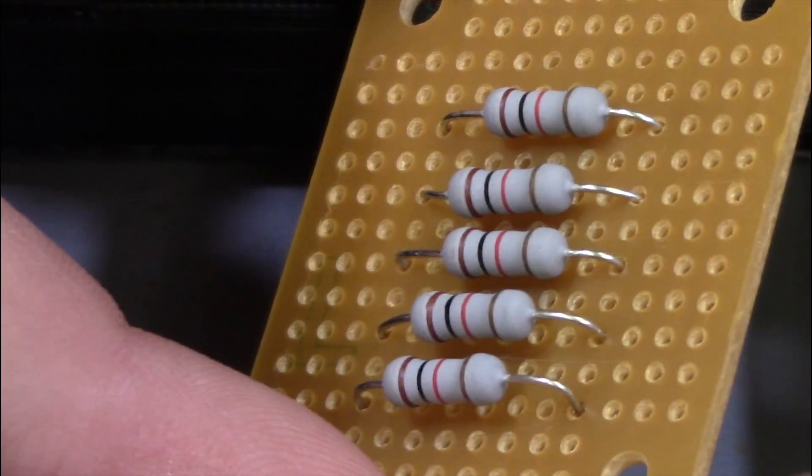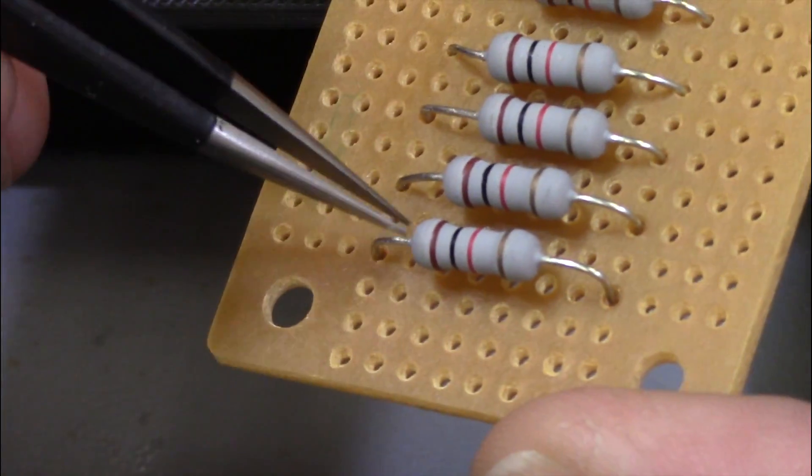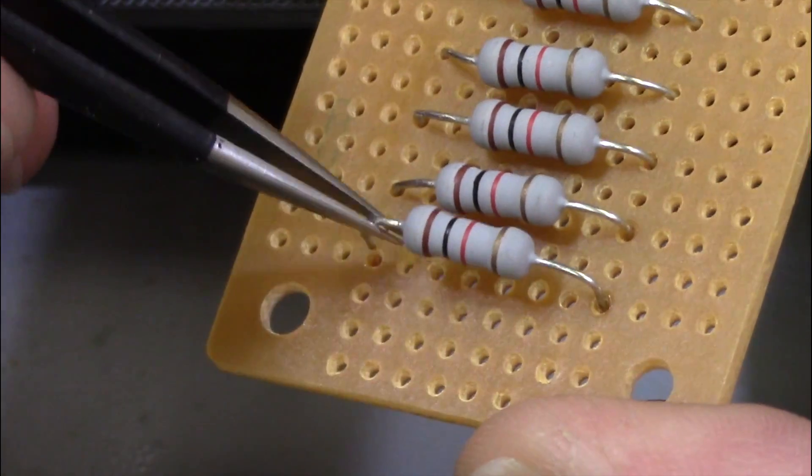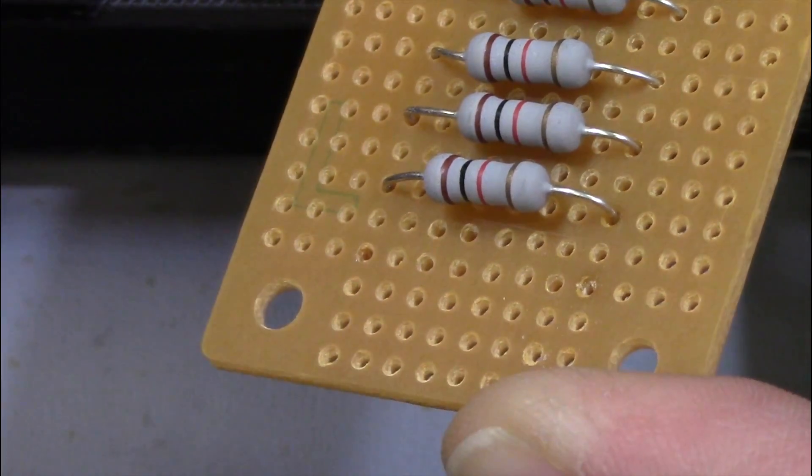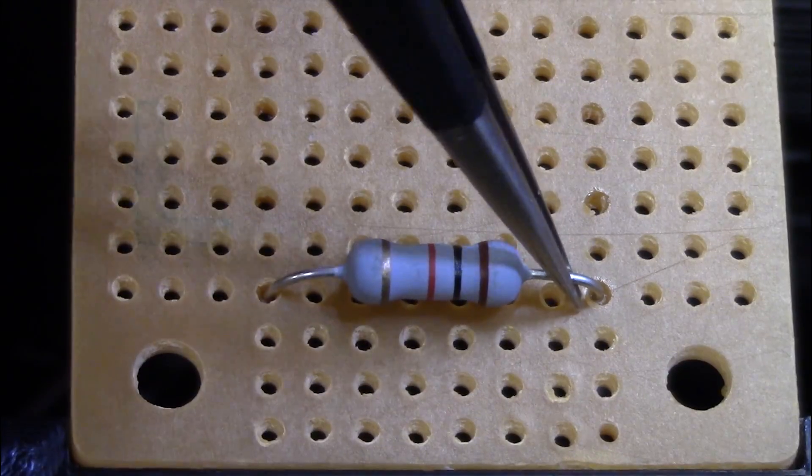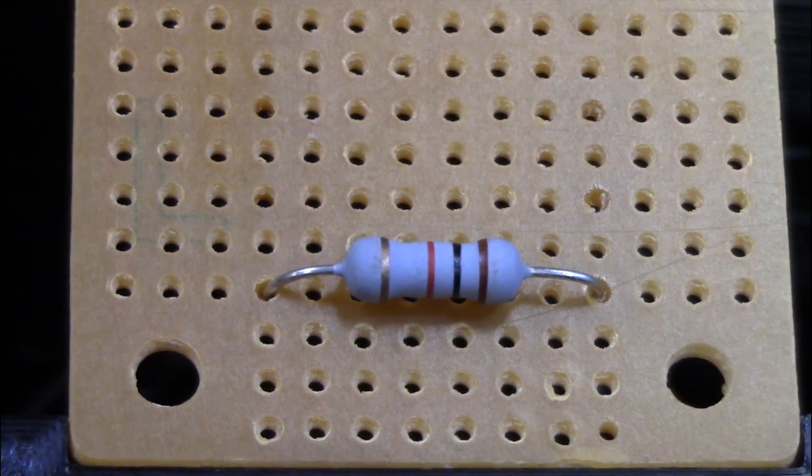There is usually a tiny bit of solder left holding the component lead to the pad. Use the ESD tweezers to wiggle the component lead back and forth until the lead breaks free. If it doesn't come free after a few wiggles, you'll need to desolder the solder joint again.